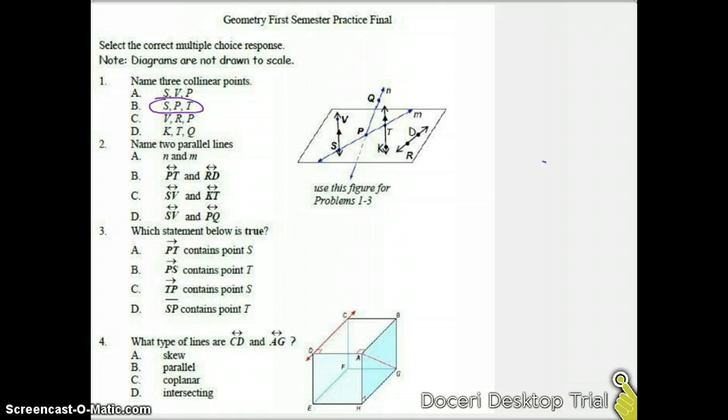Now we need to name two parallel lines in the same diagram. If I'm looking here, I want to find those markings for parallel, and that's those arrows right there. So I could have VS and KT be my parallel lines, so we'll just say SV and KT.